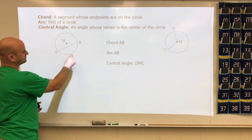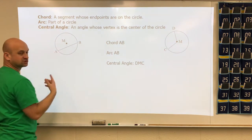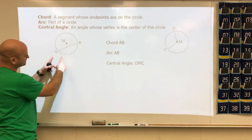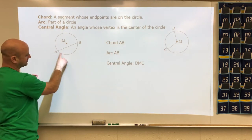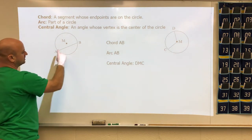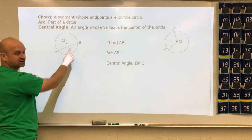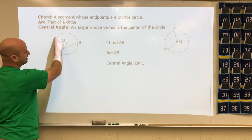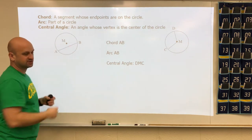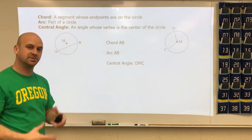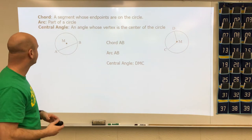An arc is part of the outside of the circle. In this circle we have arc AB going one way — that would be the minor arc — and arc AB going the other way, which would be the major arc.